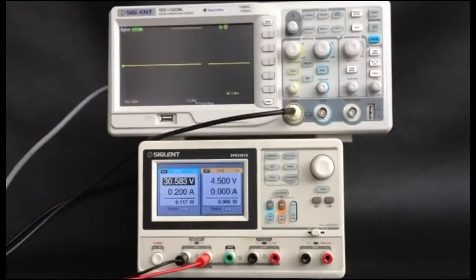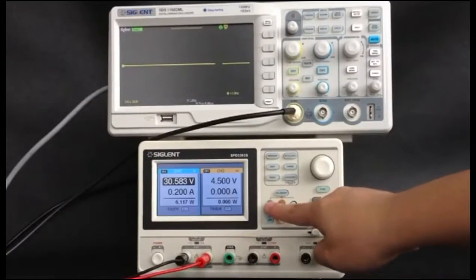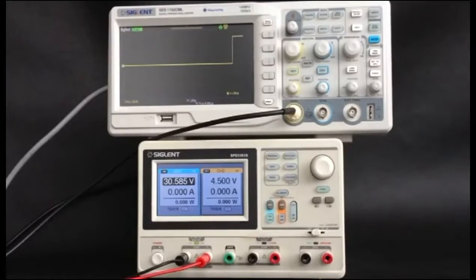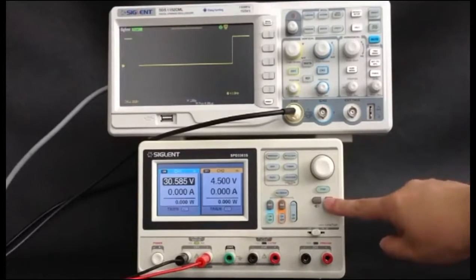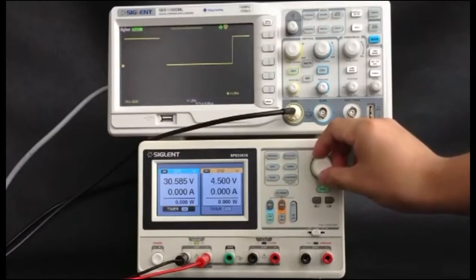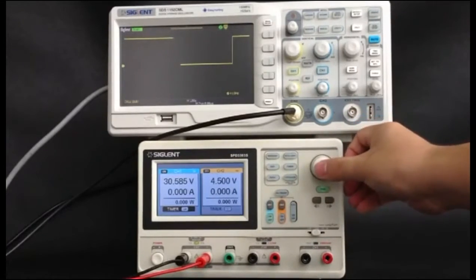Switch on the channel output. Move cursor to timer menu by pressing the direction button. Revolve the multifunction knob to make the timer state to on.